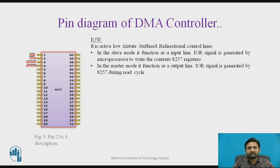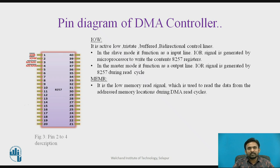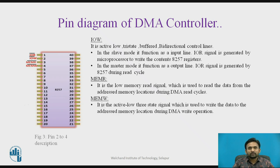IOR signal is generated by 8257 during a read cycle. About the next two pins, MEM-R and MEM-W — MEM-R is the active low memory read signal which is used to read the data from the addressed memory location during DMA read cycle. MEM-W is the active low signal which is used to write the data to the addressed memory location during DMA write operation.